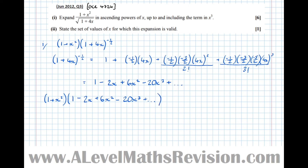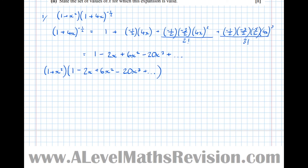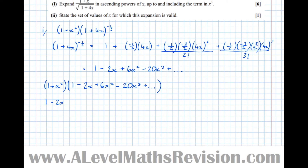So (1 + x²) × (1 − 2x + 6x² − 20x³ + ...). Multiplying by 1: 1 − 2x + 6x² − 20x³. Multiplying by x²: +x² − 2x³. Further terms give powers higher than x³, and we only want up to x³, so we're done. Collecting terms: 1 − 2x + 7x² − 22x³.